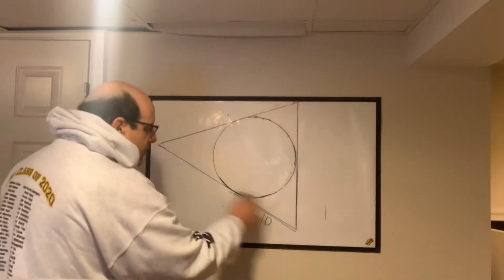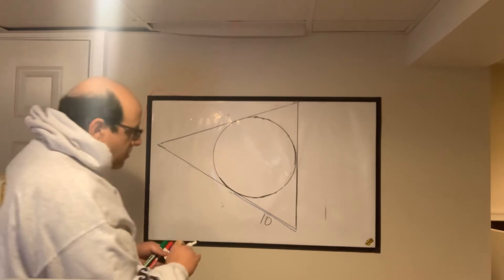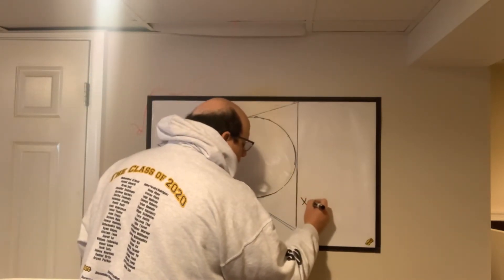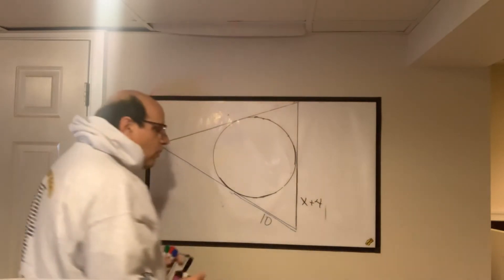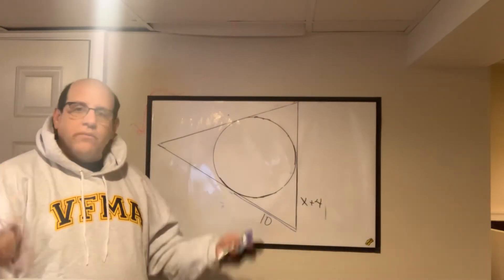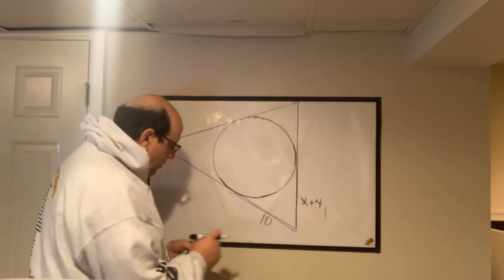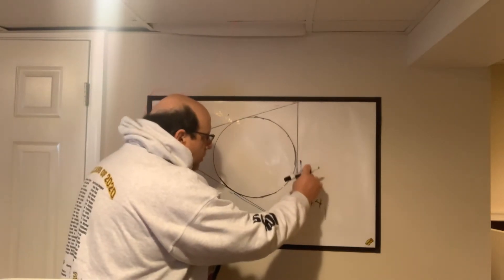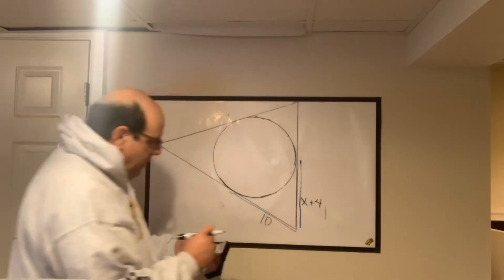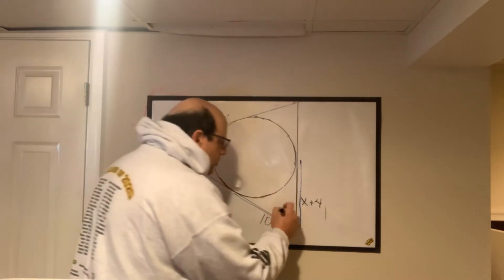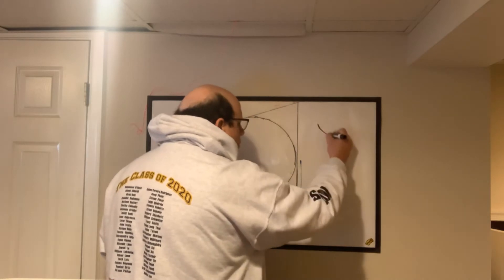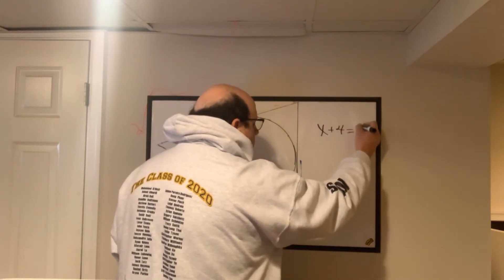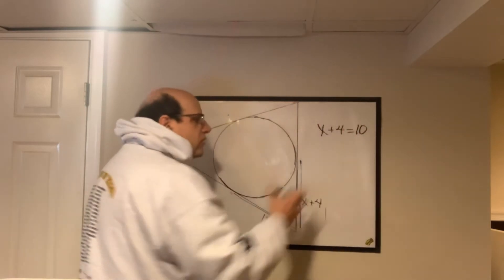What if they give you an expression instead of an actual value? Right? What if they say this is 10, but this is x plus 4? Well, okay, we'll solve it the same way. We know that these two things are the blue guys, and they should be congruent. So if they're congruent, just put an equal sign in the middle and say x plus 4 equals 10. And then solve that way.